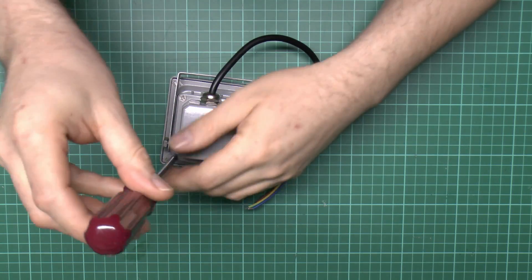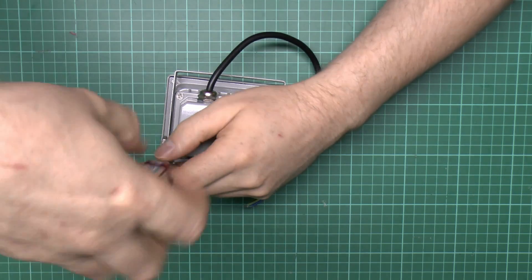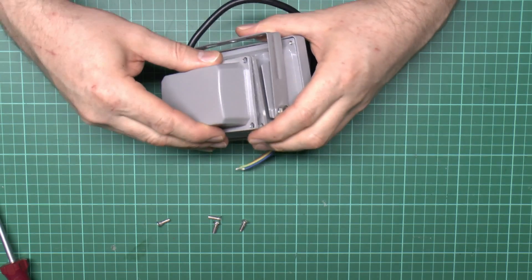First of all we'll just need to undo the screws here. Just take the four screws out the back there, and then this just lifts away.